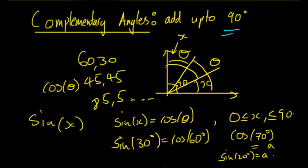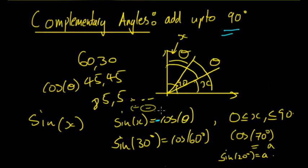This is for the first quadrant, but it also changes depending on what quadrant you're in. In the third quadrant they will also be equal because they're both negative. However, in the second and fourth quadrants, sine x is going to equal negative cos θ, because one is positive and one is negative. The magnitudes will be equal but the signs differ, so you need to include a negative for the second and fourth quadrant.